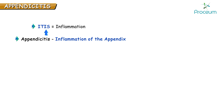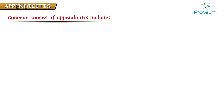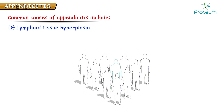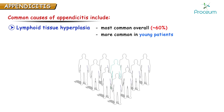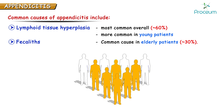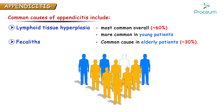Now let's understand why the appendix gets inflamed. The most common cause of appendicitis is lymphoid tissue hyperplasia, in about 60% of patients. The second most common cause is fecoliths, in about 30% of patients. So if 10 patients with appendicitis come to you, 6 will have lymphoid tissue hyperplasia and 3 will have fecoliths.